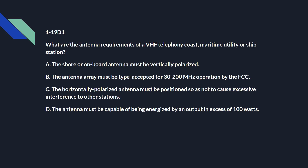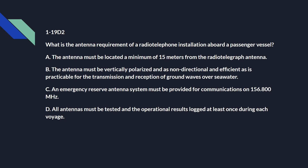1-19 Delta 1: What are the antenna requirements of a VHF telephony coast maritime utility or ship station? Correct answer is A: the shore or onboard antenna must be vertically polarized. 1-19 Delta 2: What is the antenna requirement of a radio telephone installation aboard a passenger vessel? B: the antenna must be vertically polarized, non-directional, and as efficient as practicable for the transmission and reception of ground waves over seawater.